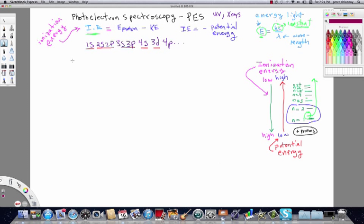In the last video we did the PES scan of scandium and when we did that we saw that its 4S PES peak is actually higher in potential energy than the 3D peak that has a single electron in it.